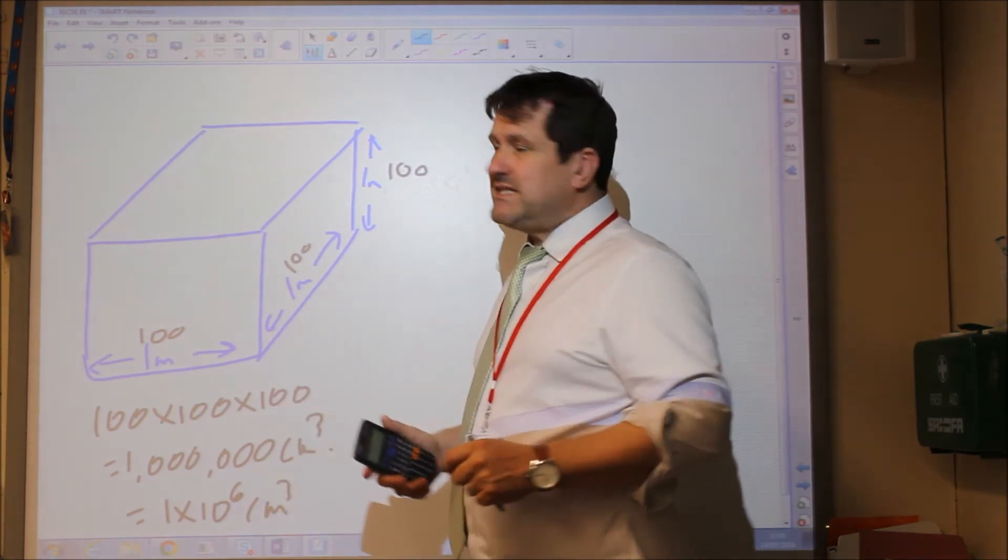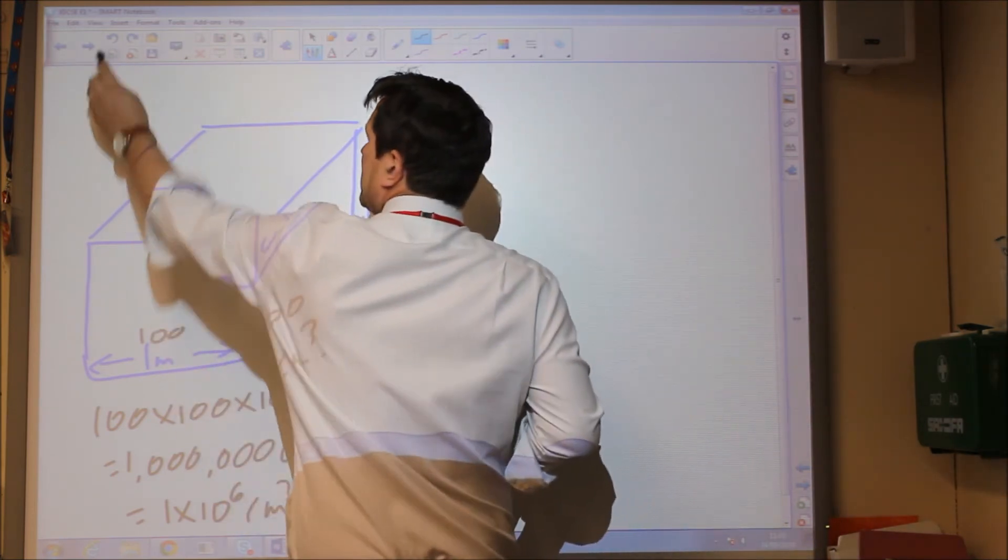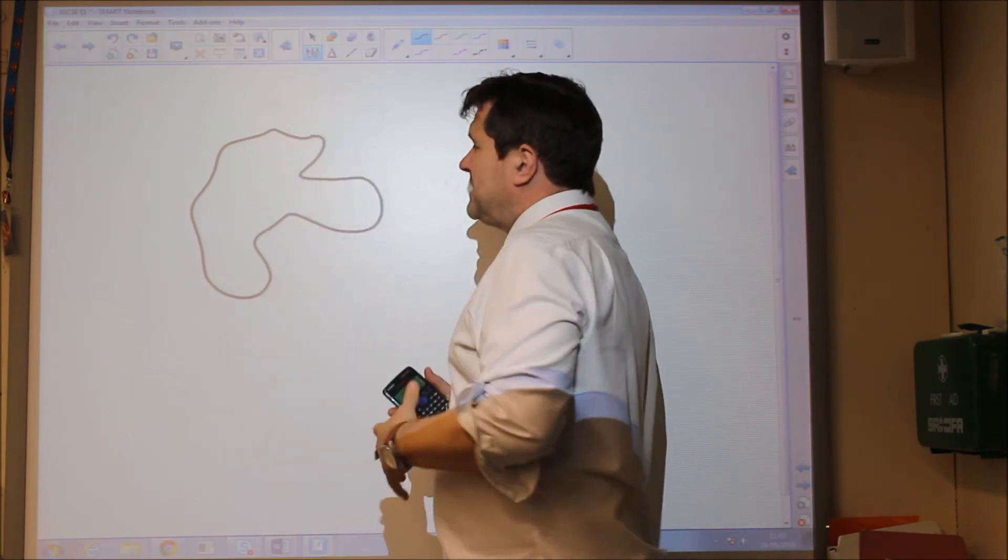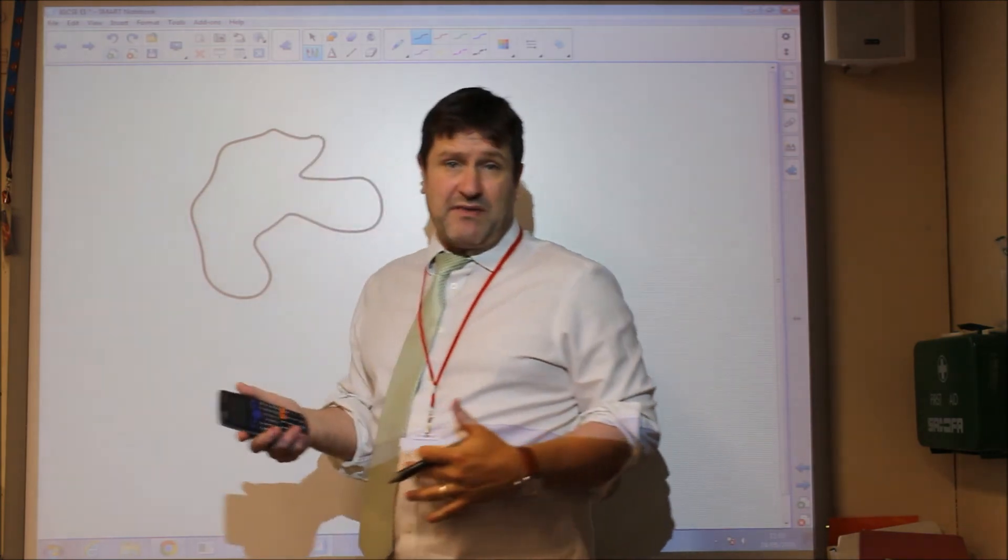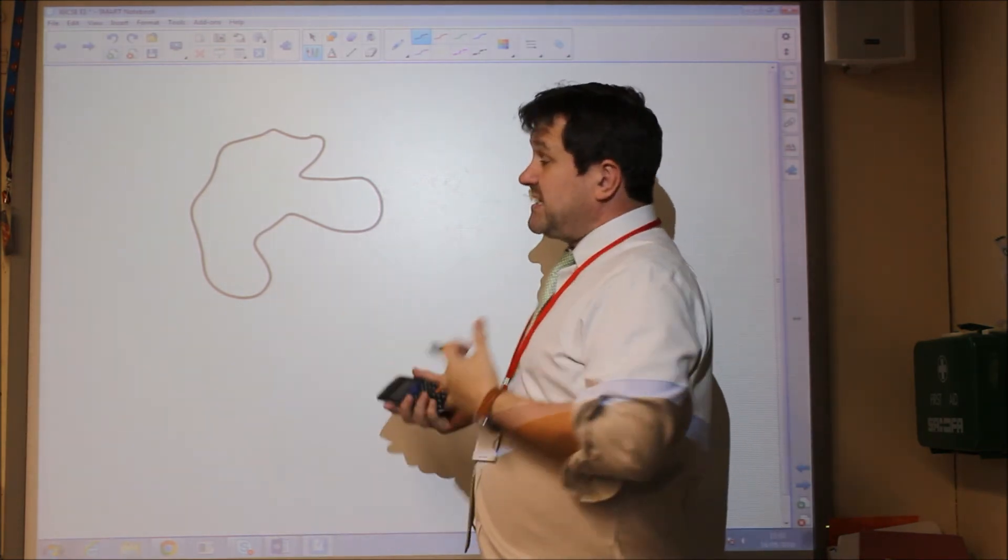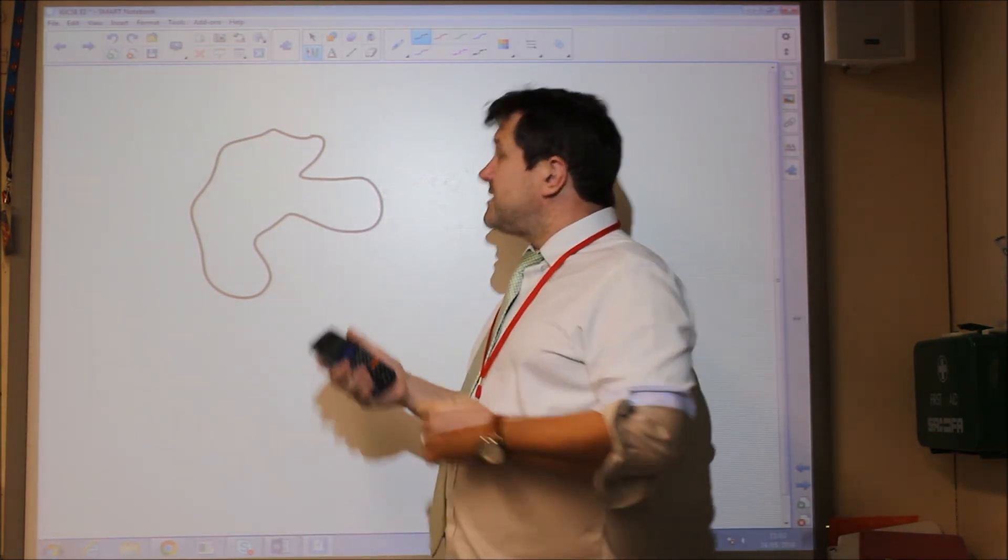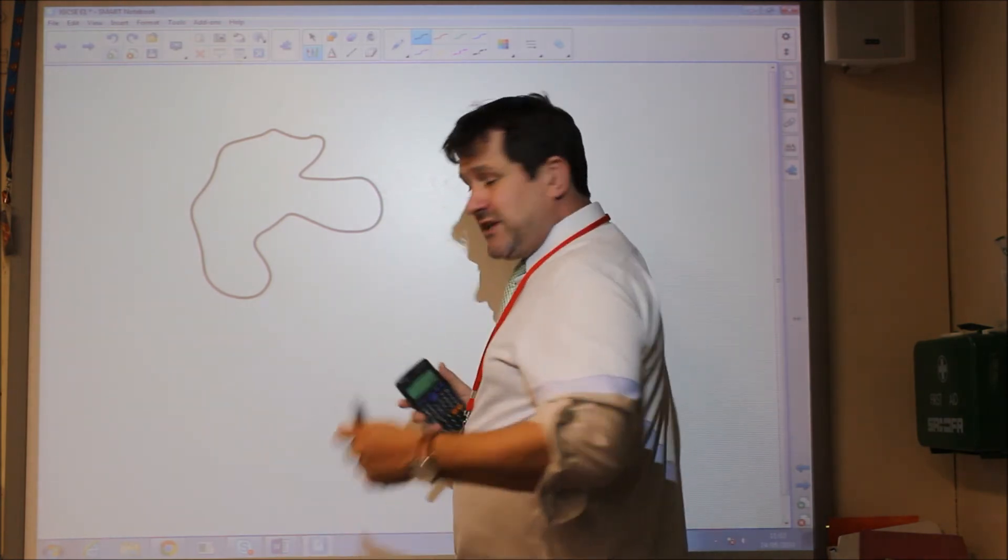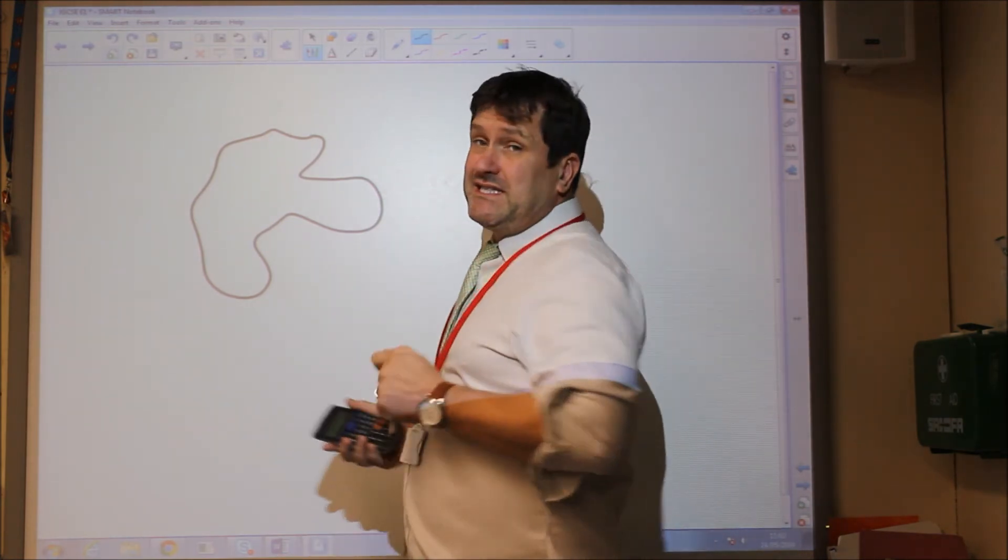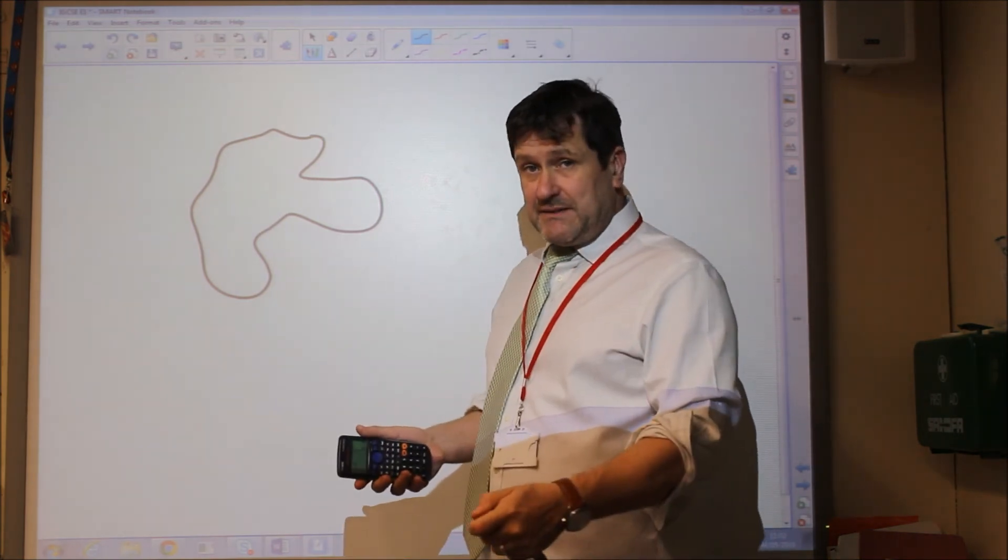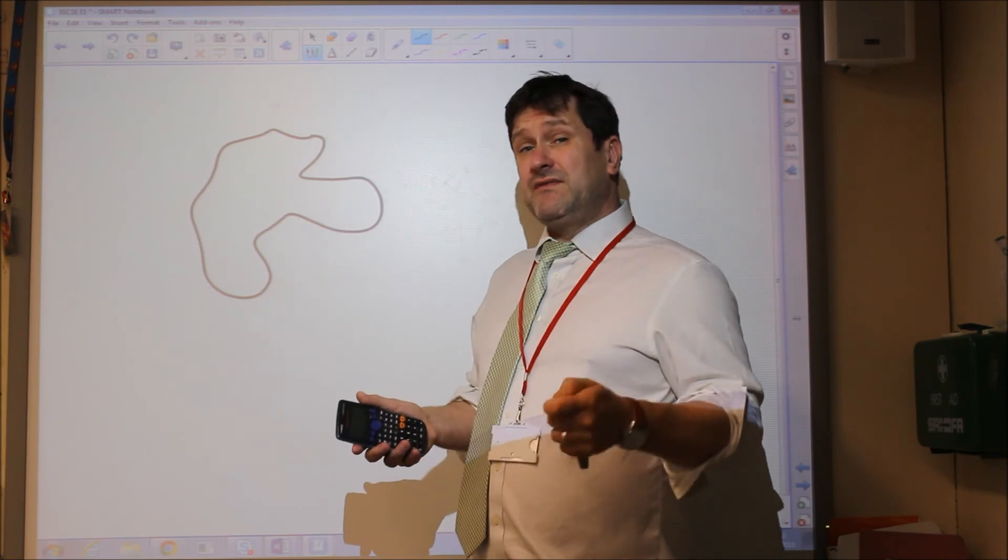And the last thing on density I want to mention is if you were given an unusual shape, so for example, you're given a shape which looks like this. So rather than using length times breadth times height, you'd be expected to use Archimedes' principle in order to determine the density of this. So for example, if you were given an unknown object with a strange shape and you were asked to determine its density, then all you would do is you would weigh the object and then you'd need to determine its volume.